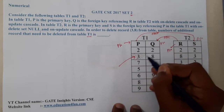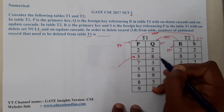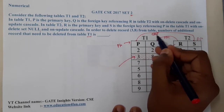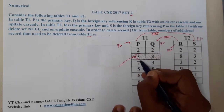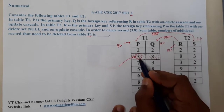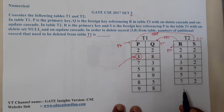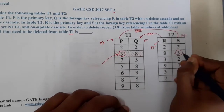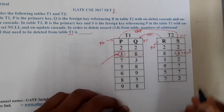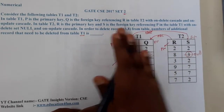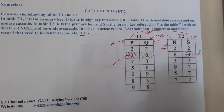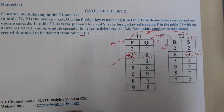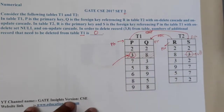Once we delete the row with value 3, the ON DELETE SET NULL rule applies: wherever S equals 3 in T2, that value is set to null. No rows are actually deleted from T1 — only null is written in the S column. This will be the updated table.